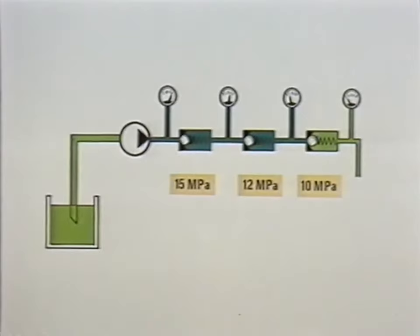The next gauge gives a reading of 10 MPa, and the third a reading of 22 MPa. This is easily explained by adding 10 plus 12, which equals 22.